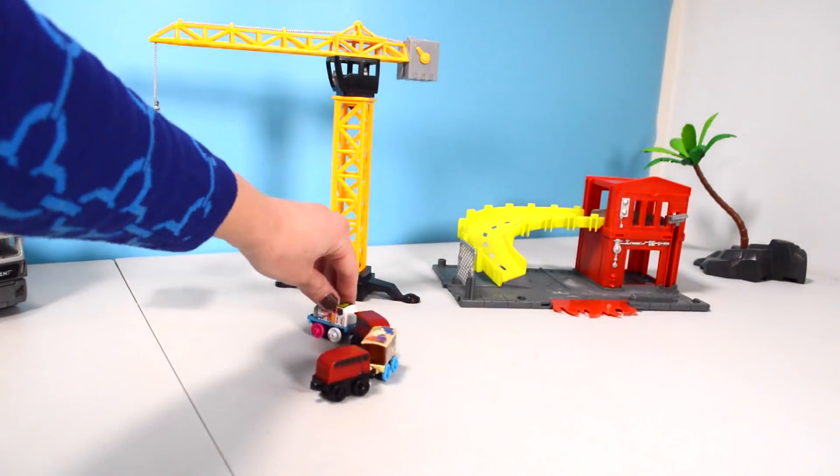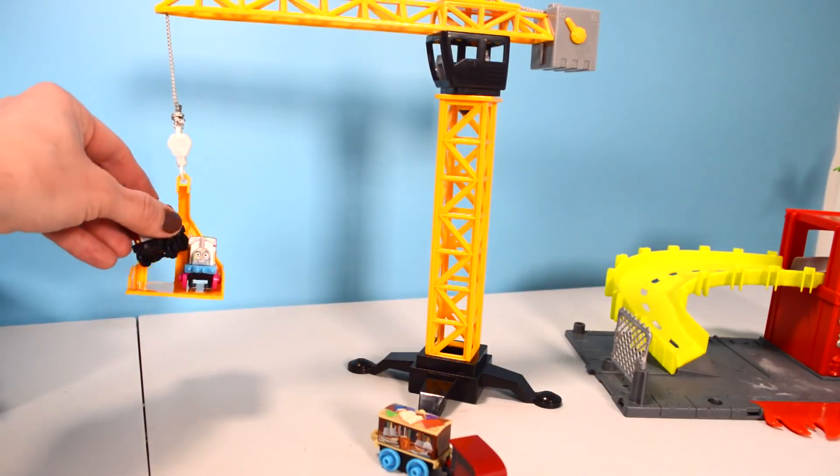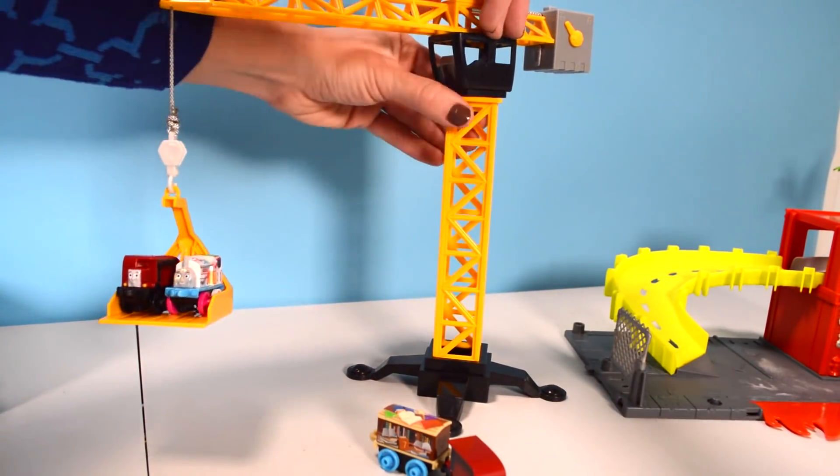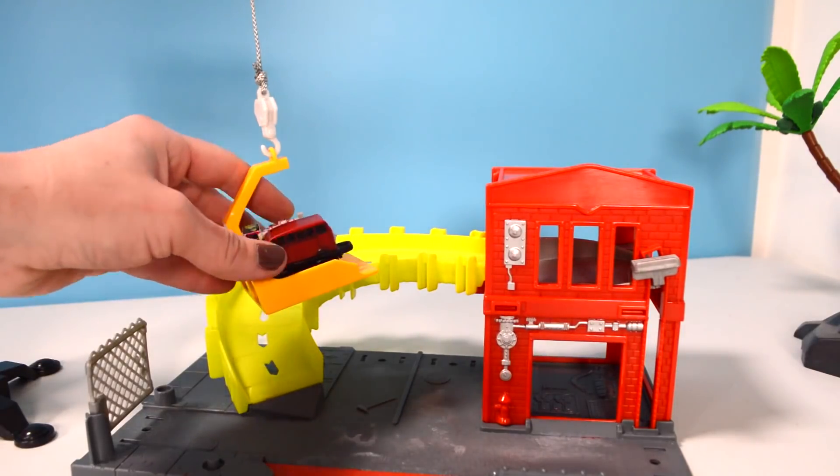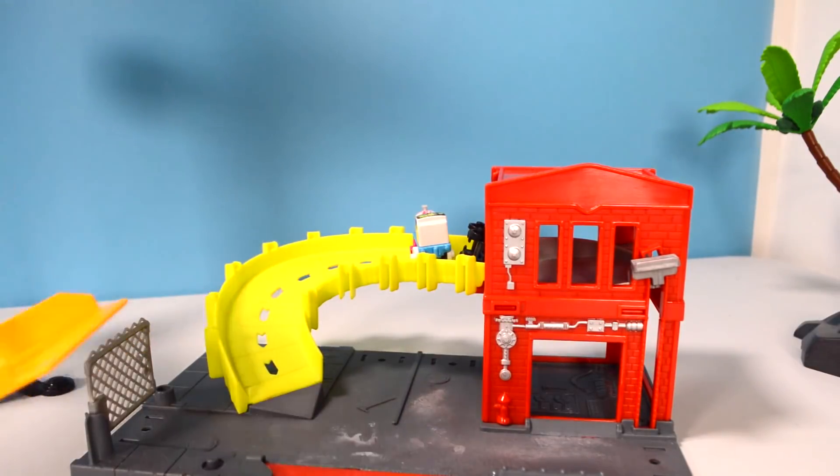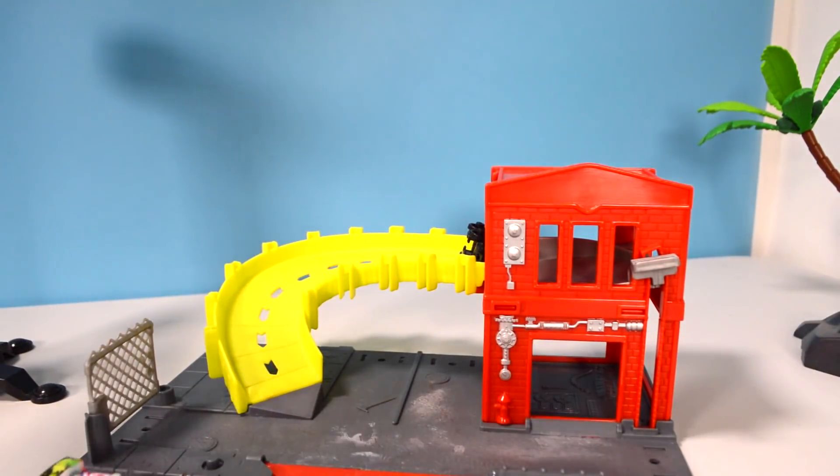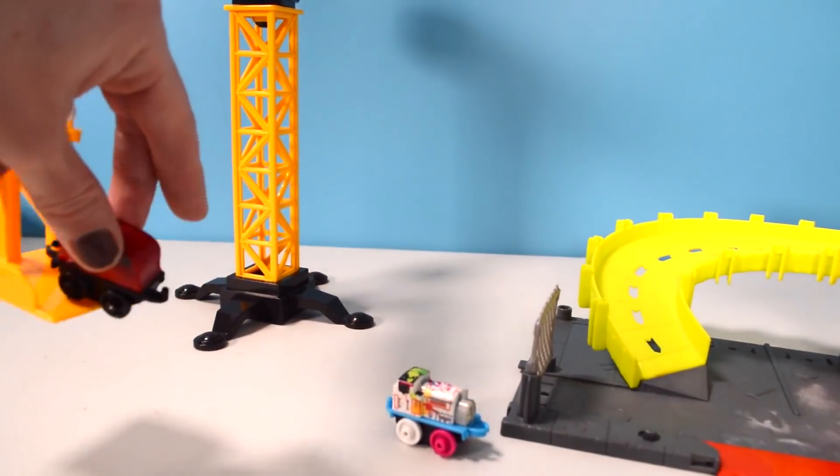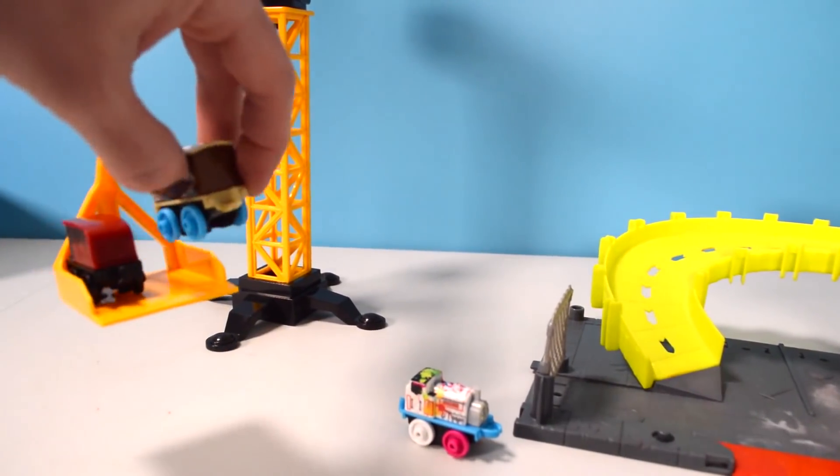Chugga chugga choo choo. We can fit two of these mini trains on here. Yeah. Now take us over to the fire station. Roger that. Perfect ramp to be launched from. Thank you Mr. Crane. You're welcome. We have a super fun ramp at the fire station. It's our turn. Taking turns is important so everybody gets to have fun.